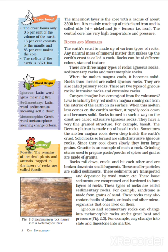Now, rocks and minerals. The earth's crust is made up of various types of rocks. Any natural mass of mineral matter that makes up the earth's crust is called a rock. Rocks can be of different color, size, and texture. There are three major types of rocks: igneous rock, sedimentary rock, and metamorphic rock.